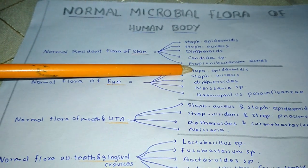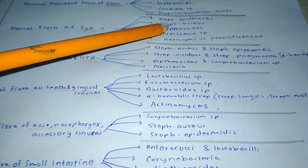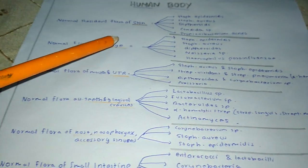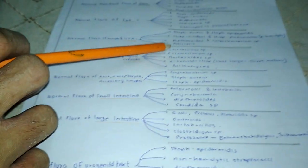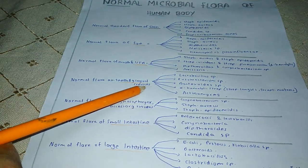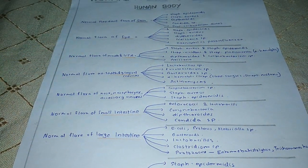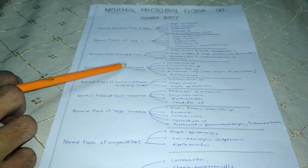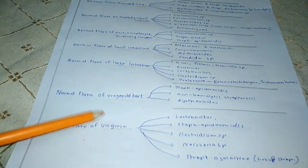We can observe that Staphylococcus epidermidis is present in almost the majority of the microbial flora across body sites. Neisseria species are found in the normal flora of the eye, upper respiratory tract, and vagina. Lactobacillus species are present in the teeth and gingival crevices as well as in the intestinal flora. I hope it is very clear about the microbial flora of the human body and the bacteria present in each separate part.